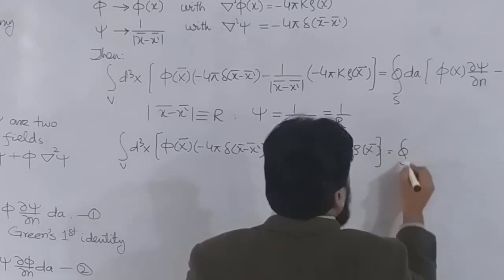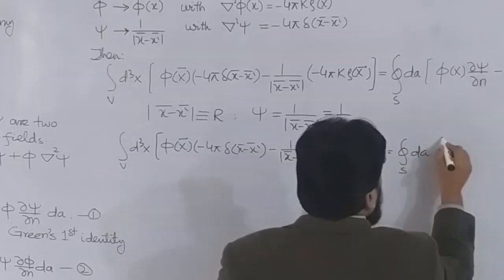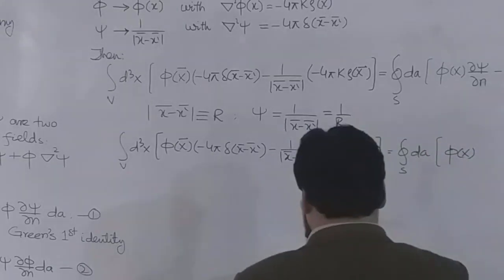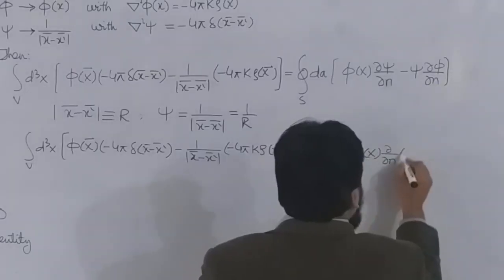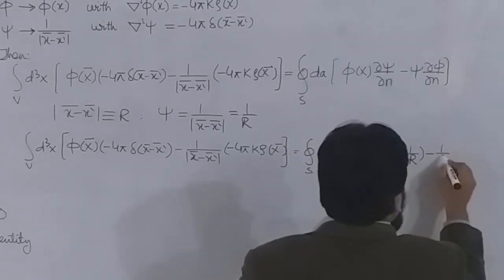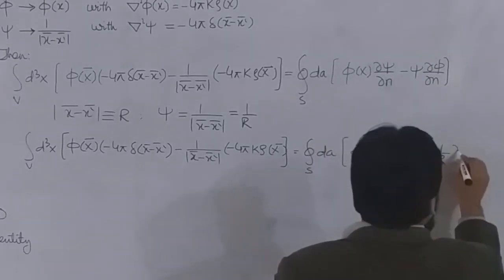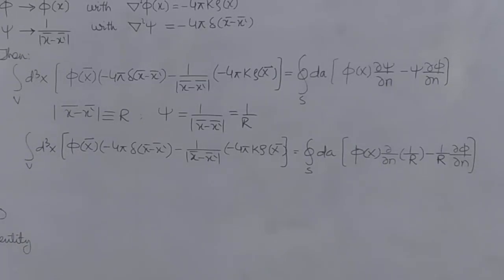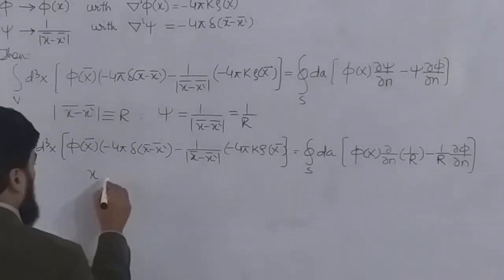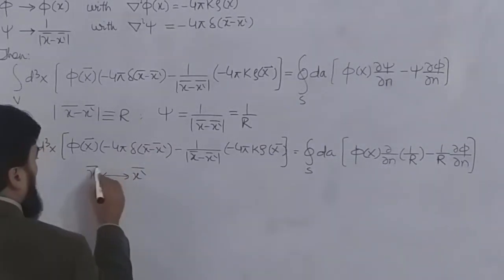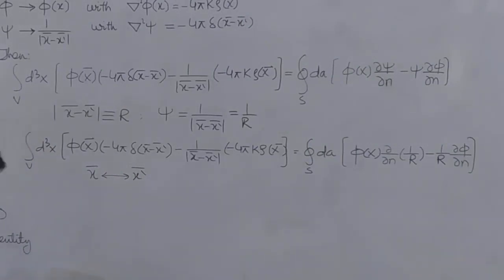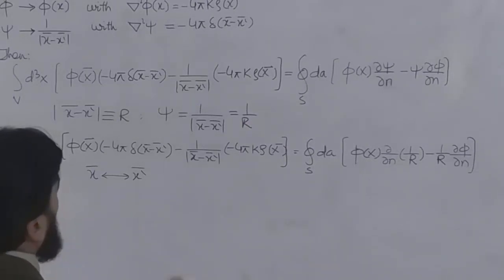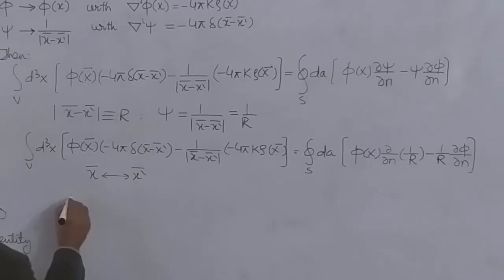The surface integral is ∮dA [ φ(x) ∂/∂n(1/r) − (1/r) ∂φ/∂n ]. Now I shuffle this relation and interchange the variables: wherever there is x I write x', wherever there is x' I write x. This relabeling does not affect the equation.